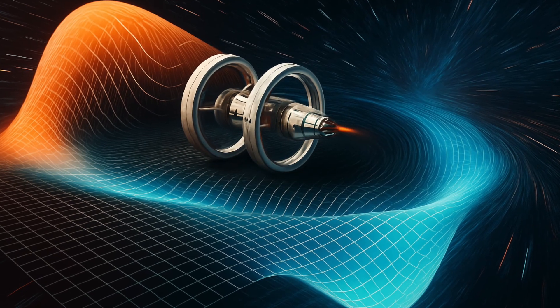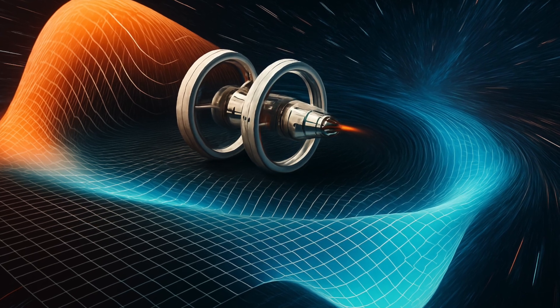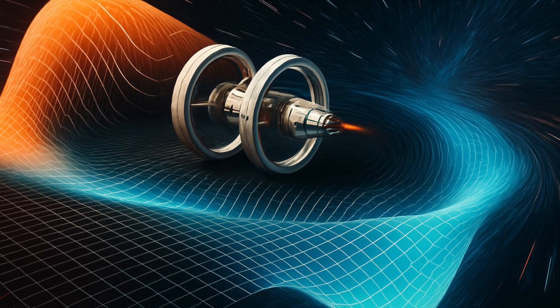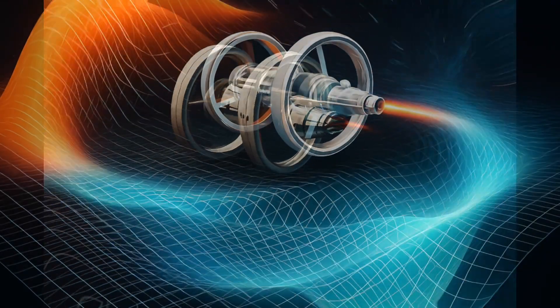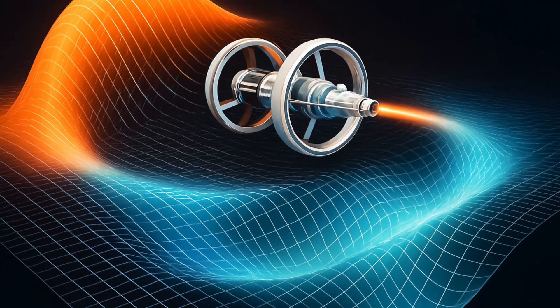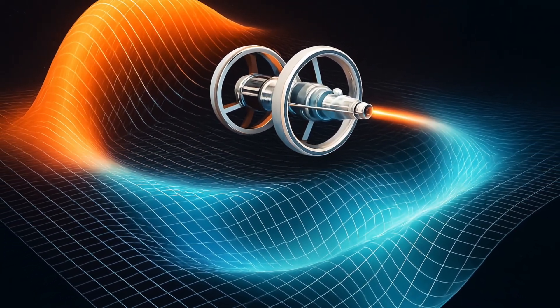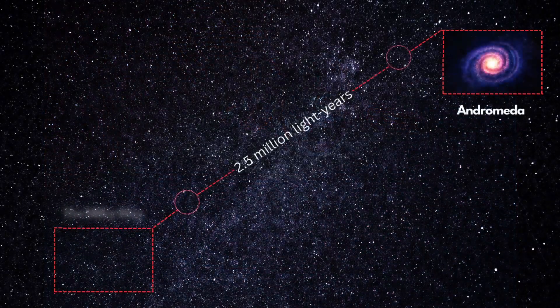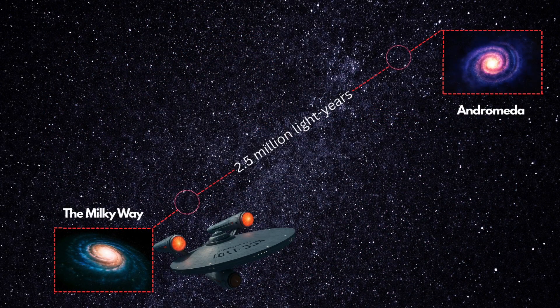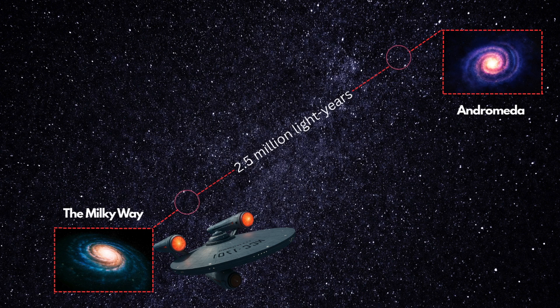A warp drive, a concept born from Einstein's theory of general relativity, is a theoretical engine that doesn't push a ship through space, but pulls space around the ship. In this system, a spacecraft could travel faster than light by warping the space-time it sits in.